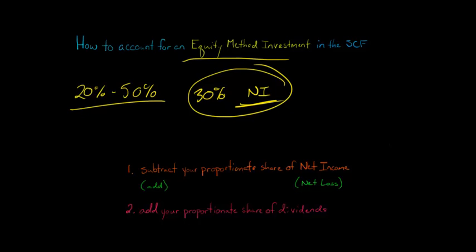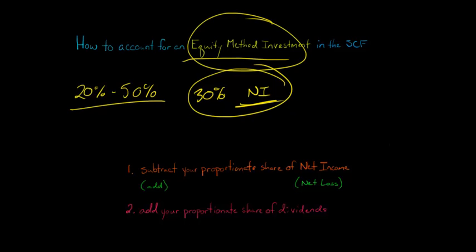Dividend revenue is not going to be revenue — it's not going to affect net income at all. Dividends received by you from that company in which you have a 30 percent investment are not going to affect net income because they're going to reduce the carrying value of your investment. If this is all new to you, I recommend you check out the video I have on equity method investments, but that's just a quick recap.